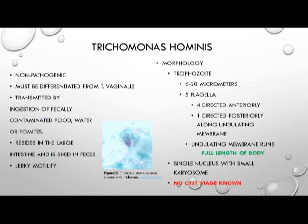Trichomonas hominis is non-pathogenic but must be differentiated from Trichomonas vaginalis. It is transmitted by ingestion of fecally contaminated food, water, or fomites, and resides in the large intestine, shed in the feces. It has a jerky motility which can be seen on a wet mount. The trophozoite measures 6 to 20 micrometers with five flagella — four directed anteriorly and one directed posteriorly along the undulating membrane, which runs the full length of the body. It has a single nucleus with a small karyosome.